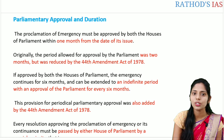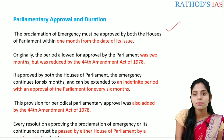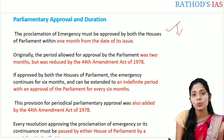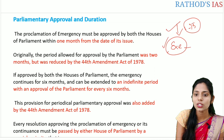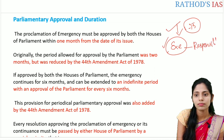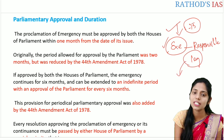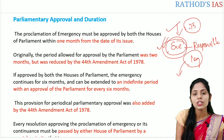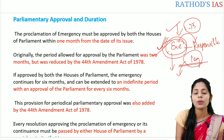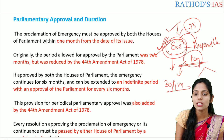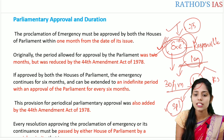Let us see parliamentary approval and duration of national emergency. Whenever the president proclaims emergency, it needs to be passed in parliament because the executive is responsible to the legislature — according to article 75 there is legislative supremacy in parliamentary democracy. Whenever there is a proclamation of national emergency, within 30 days it should be passed in the legislature — that is, in both houses, the Lok Sabha and the Rajya Sabha, with special majority. Special majority means absolute majority plus more than two-thirds of members present and voting.